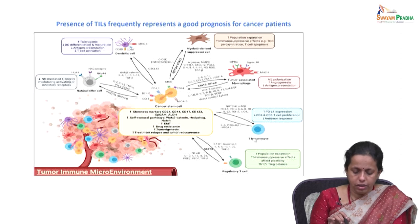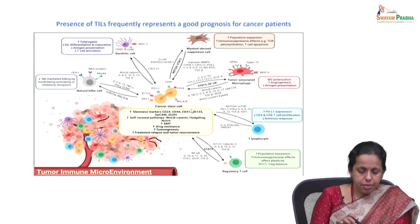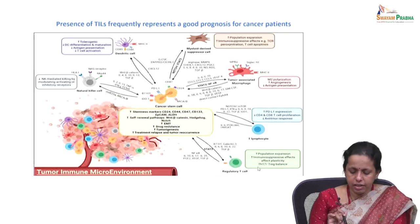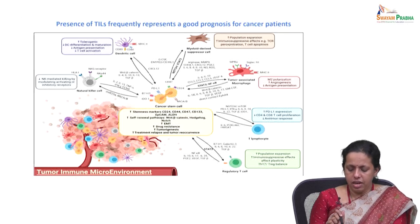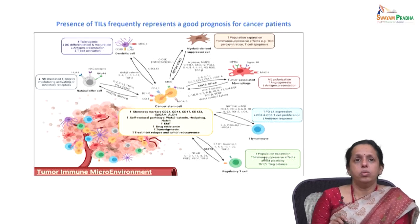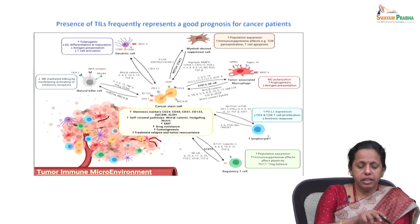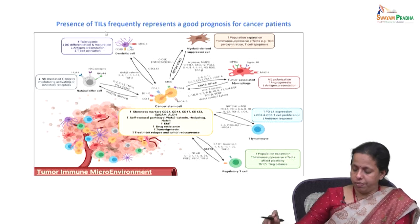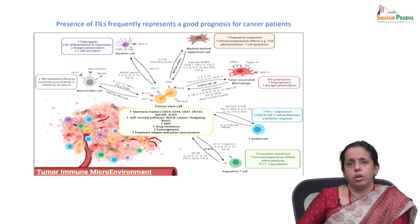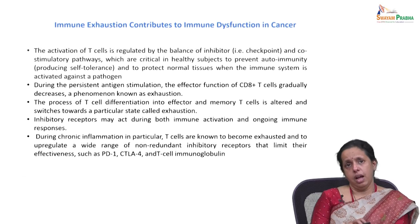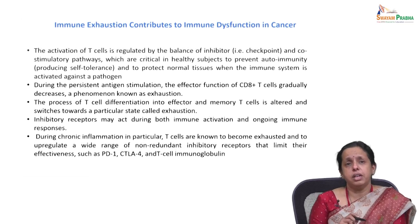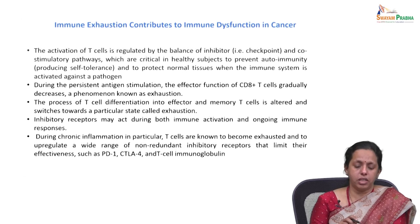Regulatory T cells show increased population expansion, leading to increased immunosuppressive plasticity such as the Th17/Treg balance. Tumor infiltrating lymphocytes play a key role here. The concept of immune exhaustion was also introduced — immune exhaustion contributes to immune dysfunction in cancer.